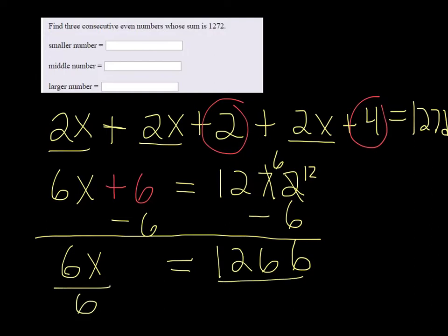And then finally divide by 6. You're allowed to use a calculator in this course. So go ahead and do 1266 divided by 6 in the calculator. And you get that x is 211.